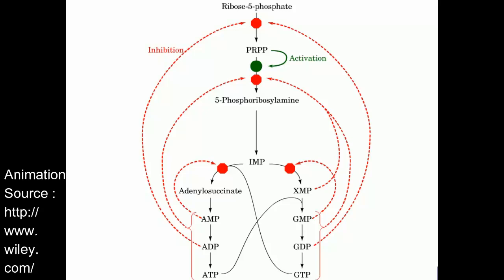Now let's talk about the regulation of the purine biosynthesis pathway. We've seen that purine biosynthesis starts with ribose 5-phosphate, involves several intermediates, and the ultimate products required are ATP or GTP. It is very important to keep the pathway tightly regulated, because an imbalance in the amounts of ATP and GTP inside the cell can cause severe problems. Most of the regulation involves product inhibitions and a few feedback inhibitions, indicated by red stop signs, while the one activation is shown with a green dot.